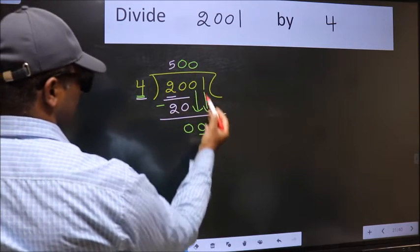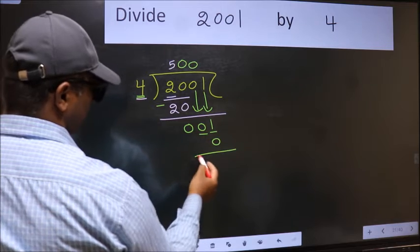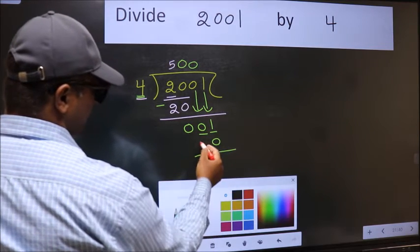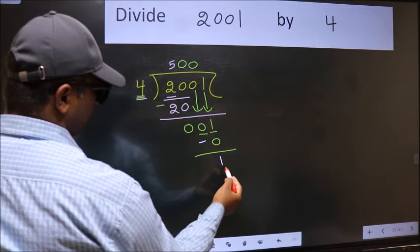So what we should do is we should take 0. So 4 into 0, 0. Now we should subtract 1 minus 0, 1.